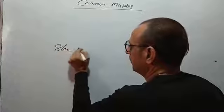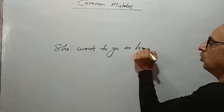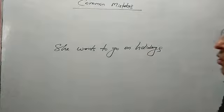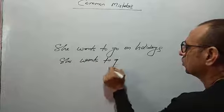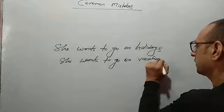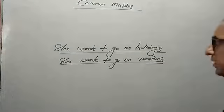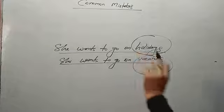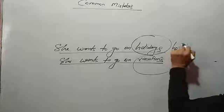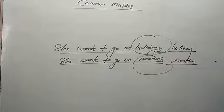Next: 'She wants to go on holidays' or 'she wants to go on vacations' — both sentences sound correct but are wrong. 'Holidays' and 'vacations' are nouns that should be kept in singular form here. The correct sentences are: 'She wants to go on holiday' and 'she wants to go on vacation.' We do not use them in plural form. I hope you have got it.